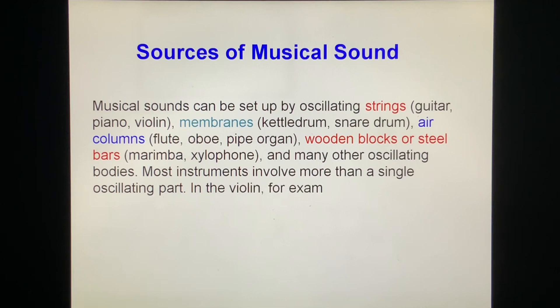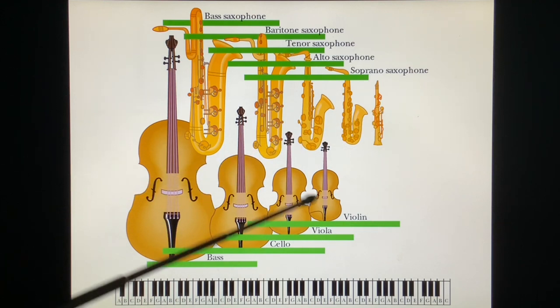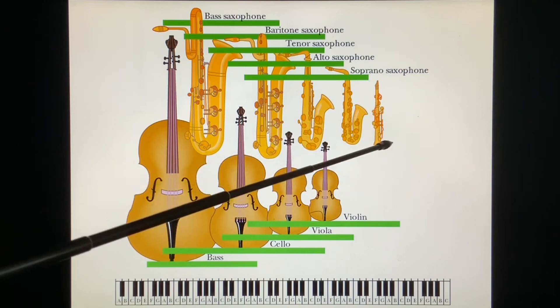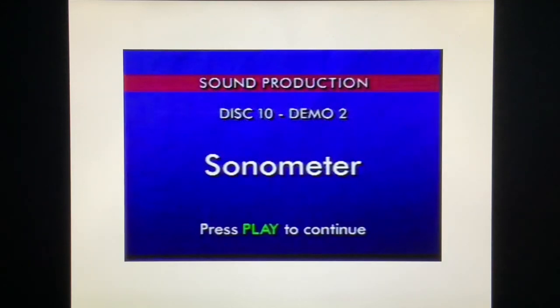Most instruments involve more than a single oscillating part. In the violin, for example, not only the strings but also the body of the instrument participates in producing the music. This is all kinds of violin or saxophone. This is a violin, viola, cello, bass. This is a soprano saxophone, alto saxophone, tenor saxophone, baritone saxophone, bass saxophone.